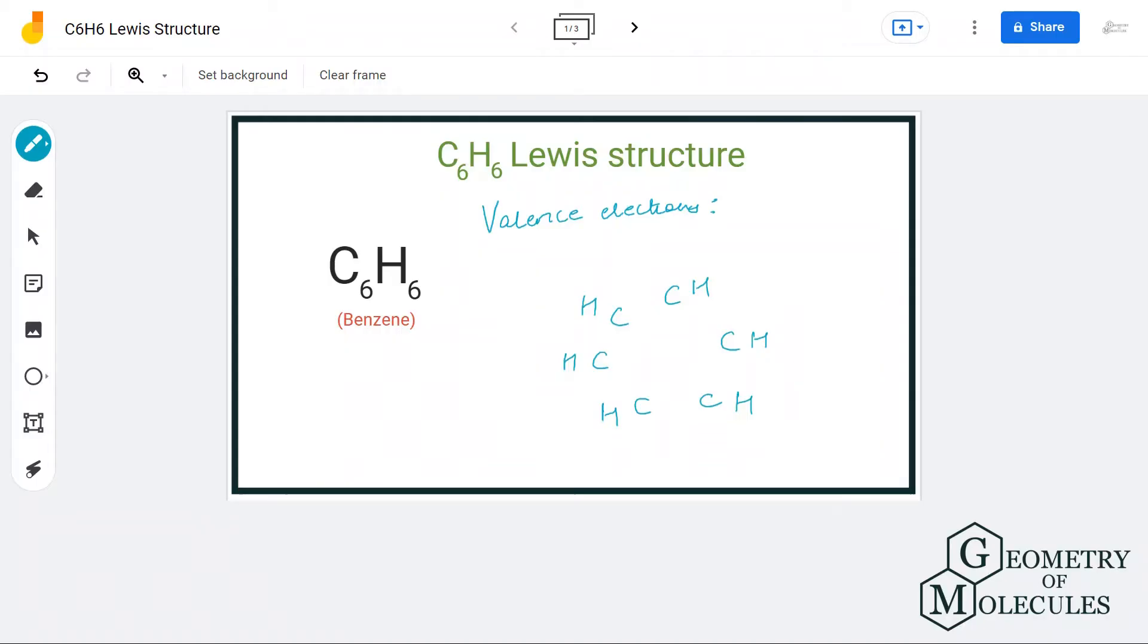Hi guys, welcome back to our channel. In today's video we are going to help you with the benzene Lewis structure, which has a chemical formula of C6H6. To determine its Lewis structure, we will first find out the total number of valence electrons.